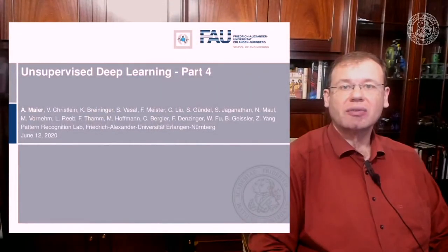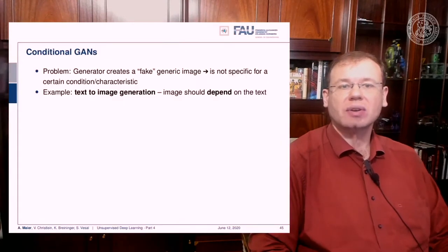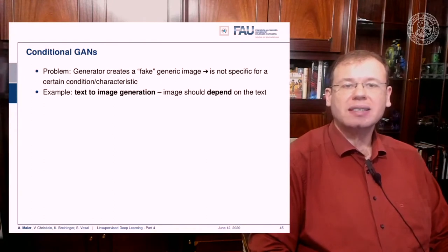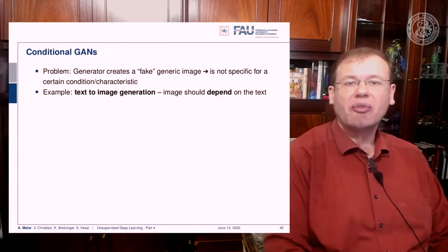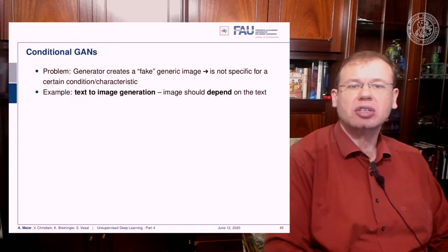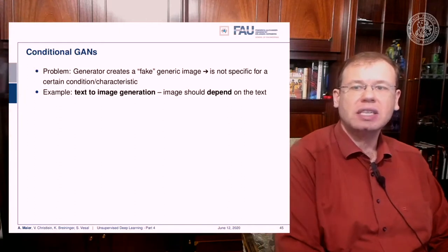Let's have a look at part four of our unsupervised deep learning lecture. We first start with conditional GANs. One problem we had so far is that the generator creates a fake generic image, but it's not specific for a certain condition or characteristic. If you have text to image generation, the image should depend on the text, so you need to be able to model the dependency somehow.